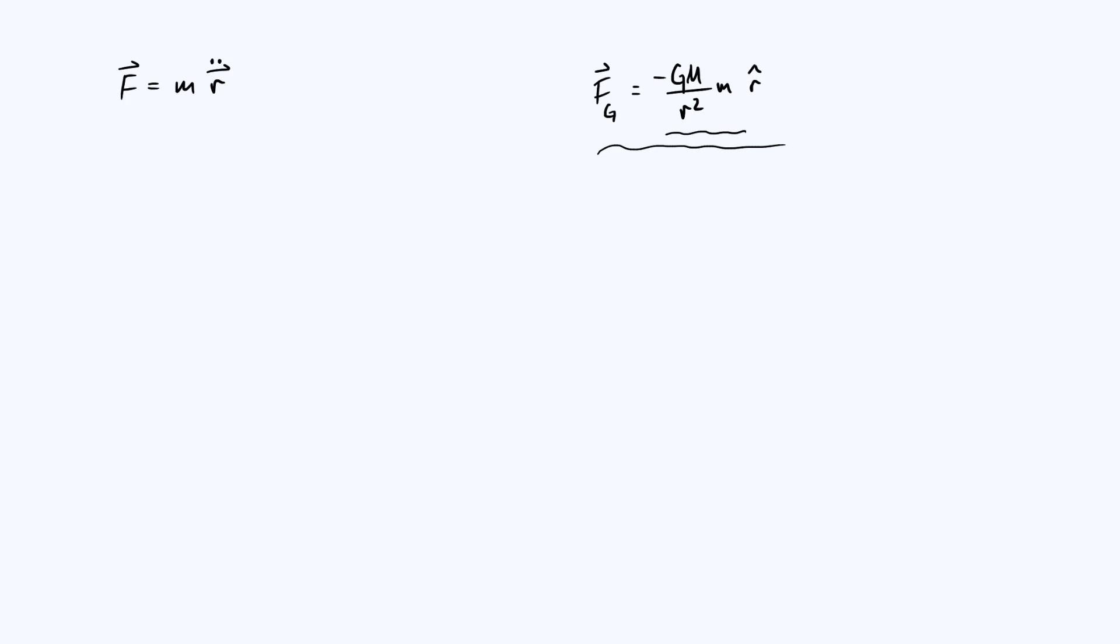According to this equation, you can think of mass as being like a gravitational equivalent of charge in that it's just a property that some types of particle have which determines how much gravitational force they experience.